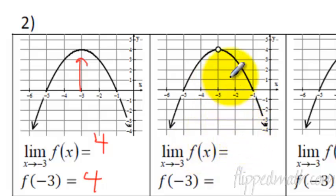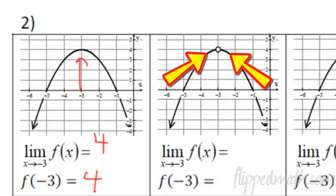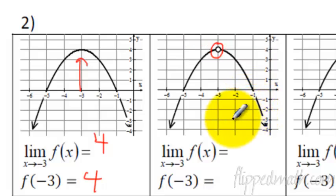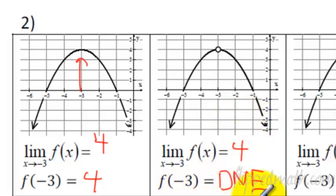Now let's go over here. Here we have a hole — a removable discontinuity. Remember, a limit means what is it approaching? First on the left side, as we approach x equals negative 3, and then from the right side — from both sides, it's still approaching a y value of 4. So this limit is also 4. But when the x value is negative 3, what is the y value? It does not exist — it's an open circle. There is no graph there, so f of negative 3 does not exist. But the limit is 4, because limits are about where it is approaching.